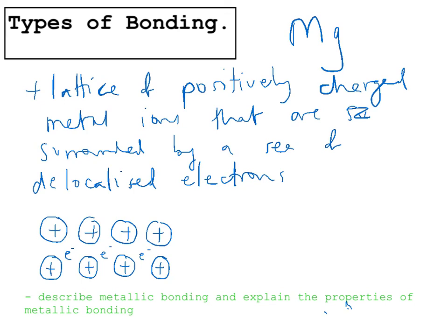The properties of metallic bonding, again, is based on this structure. They have a high melting point because you have to break lots of strong metallic bonds. And it can conduct electricity or heat. That's because it has free electrons that can move.